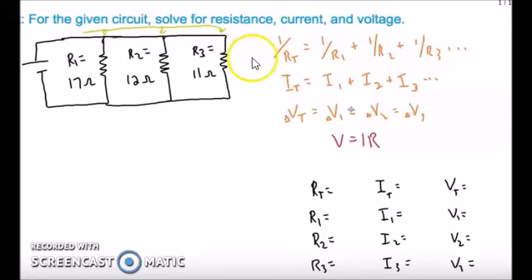We have characteristics which we discussed in the previous online class. These are the three characteristics: total resistance is equals to sum of individual resistances, total voltage is equal to sum of individual voltages, and in parallel circuit voltage remains same.